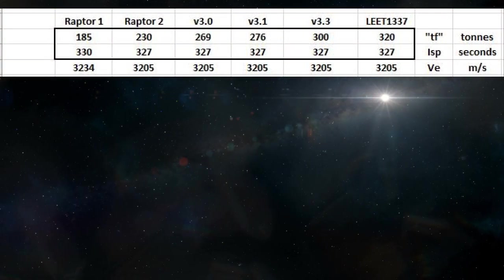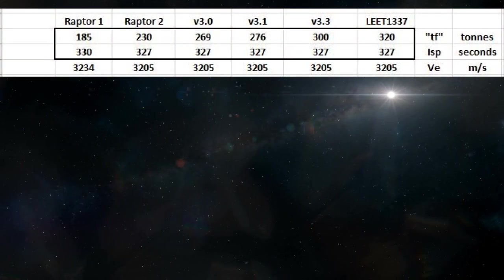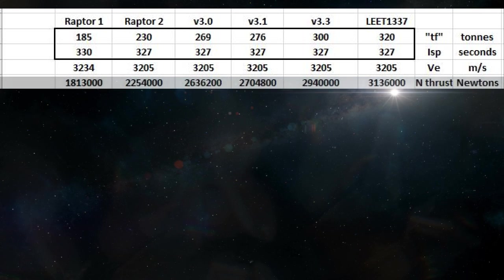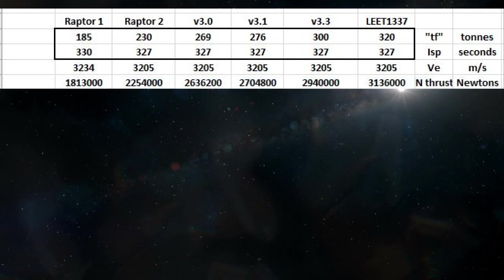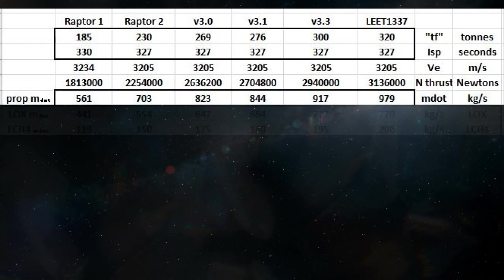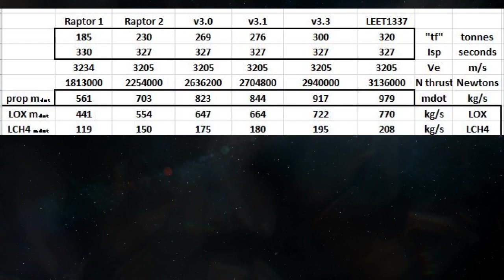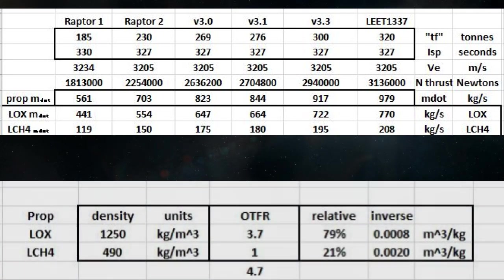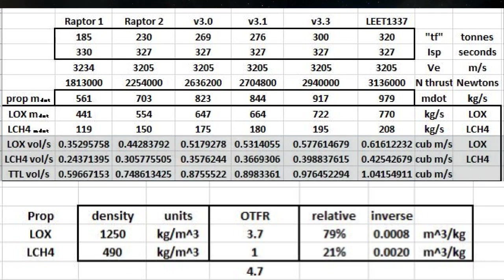We get our exhaust velocity for all the rockets and turn these thrust numbers into usable units — newtons. Now we get our mass propellant flow, or m-dot, as before. We calculate liquid oxygen and liquid methane ratios using the oxidizer-to-fuel ratio of the Raptor engine. We could also calculate the volume per second pumped through the engine by knowing the density of these cryogenic propellants. The volume pumped through a Raptor version 3.3 is much higher than a Raptor 1.